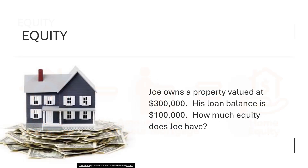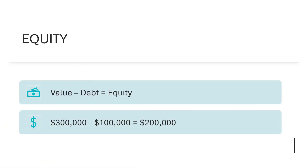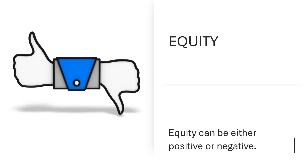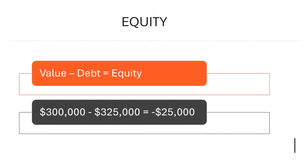Let's say Joe owns a property valued at $300,000 and his loan balance is $100,000. How much equity does he have? We simply subtract the debt of $100,000 from the value of the home — Joe has $200,000 equity. Note that equity can be either positive or negative. If Joe's loan balance is $325,000, he would owe more than the home is valued at, resulting in negative equity of $25,000. Value minus debt equals negative $25,000.